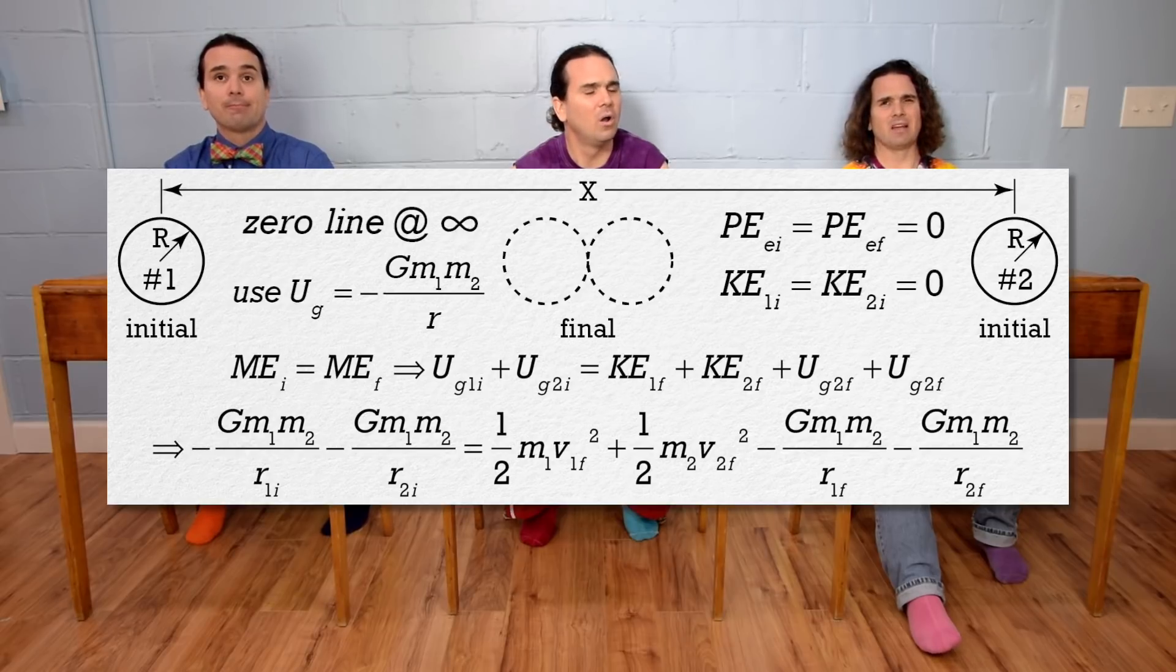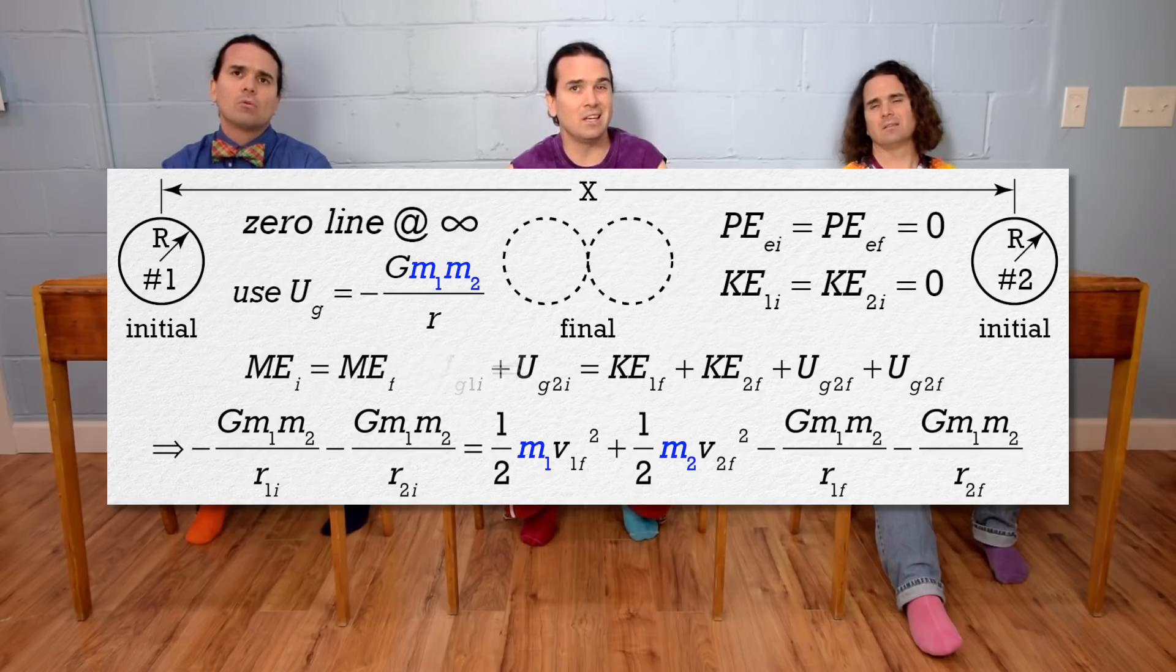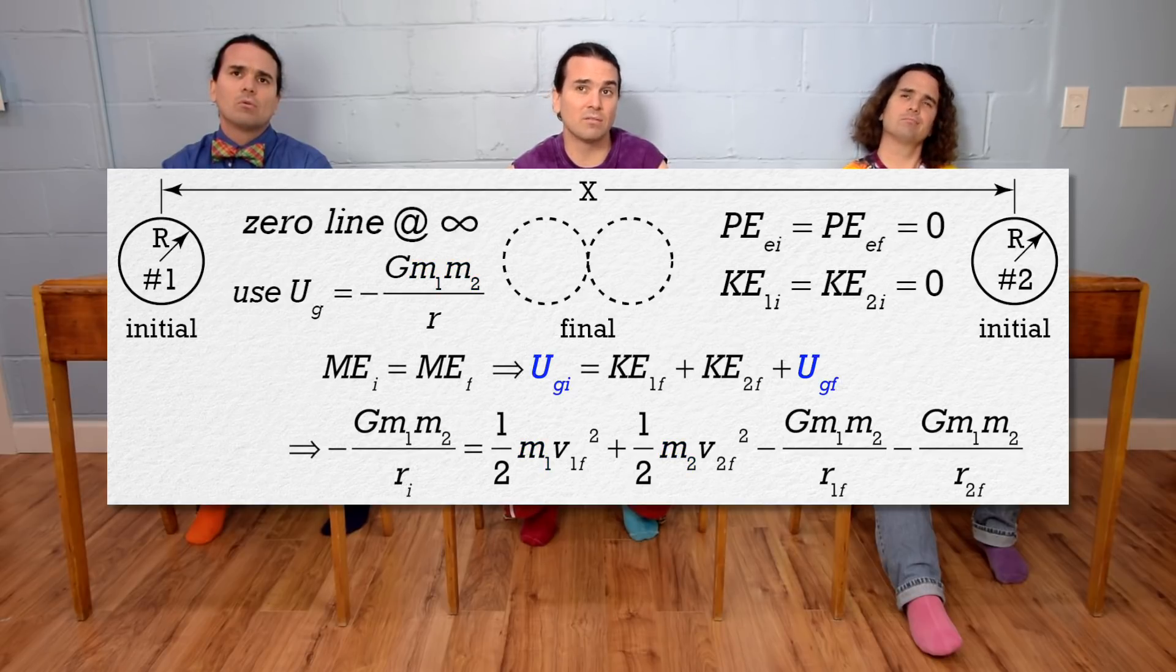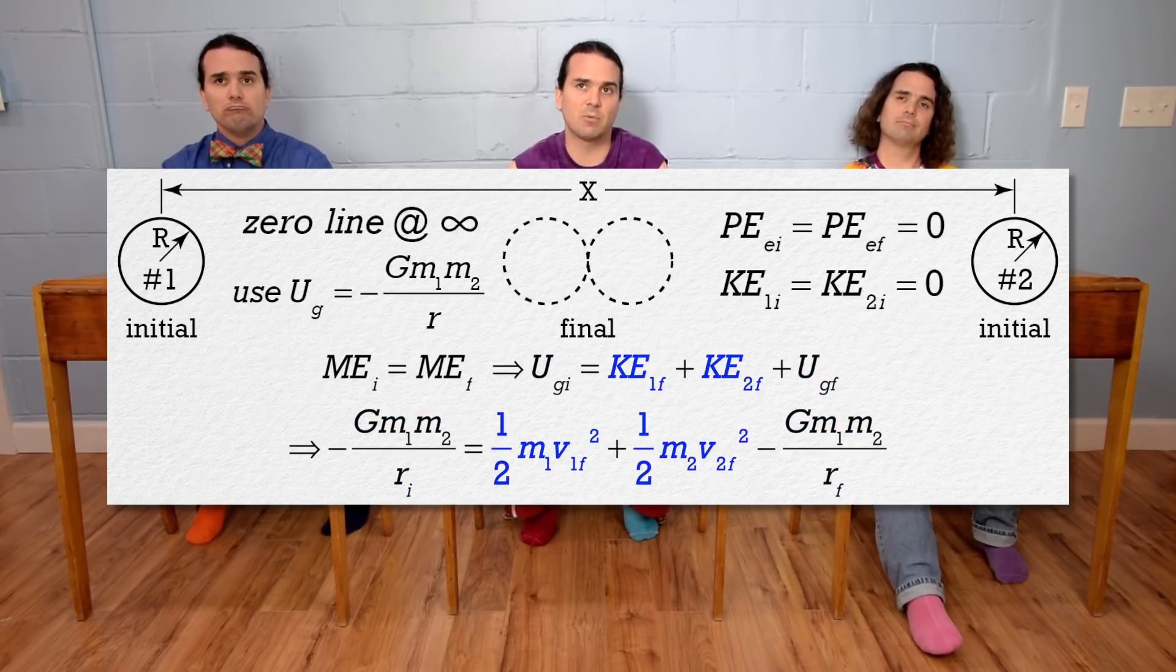Something is not right. Yeah. Remember, while it takes only one mass to have kinetic energy, it takes two masses to have universal gravitational potential energy. That means we only need one initial expression and one final expression to represent the universal gravitational potential energies of the spheres. However, we need two final expressions for the kinetic energies of the two spheres.